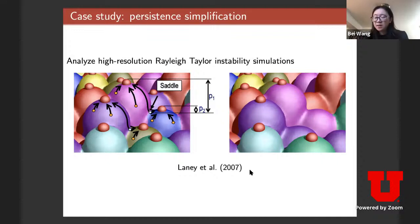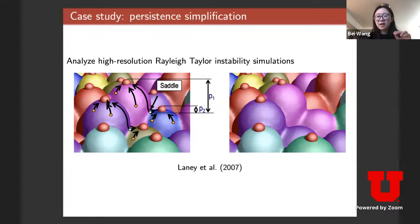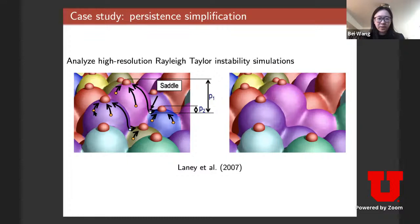The question is how to define what a bubble is mathematically. One way is to define a single bubble as all the points whose gradient — meaning ascending direction — flows to the same local maximum. For example, everything in purple is a single bubble because every point's gradient flows to that local maximum. Behind it, in light purple, is another bubble whose gradient flows to a different local maximum.